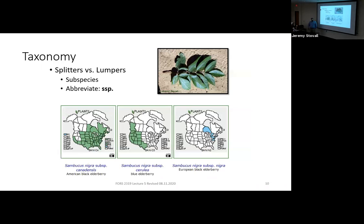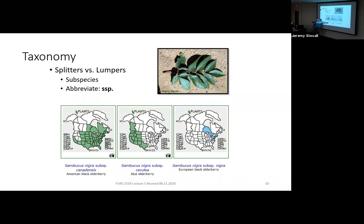Sometimes we'll have subspecies. Subspecies is the same idea as a variety — minor morphological differences within a species. We're going to learn Sambucus nigra subspecies canadensis, American black elderberry, this semester. It's abbreviated 'subsp.' or often just 'ssp.' So again, you've got to fit 'nigra subspecies canadensis' all in that specific epithet box.